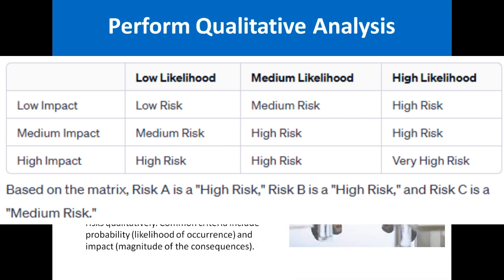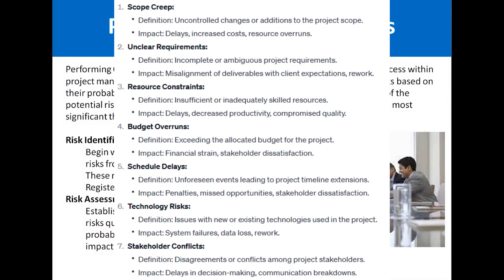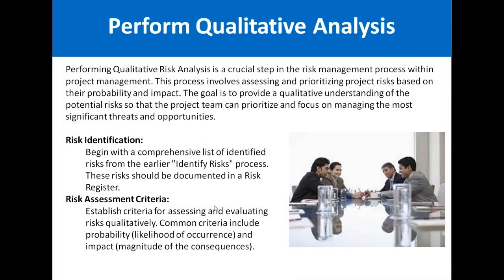Qualitative analysis is based on the concept of probability and impact — how many chances there are that a risk will occur and what the impact on the project will be. Risk identification begins with a comprehensive list of identified risks from the earlier 'Identify Risks' process. These risks should be documented in a risk register, which we start from in this process.